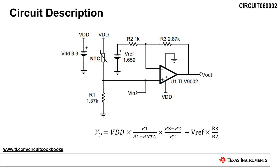VIN is amplified by a non-inverting amplifier. A reference voltage, VREF, offsets the gain, which helps utilize the full output swing of the op-amp.